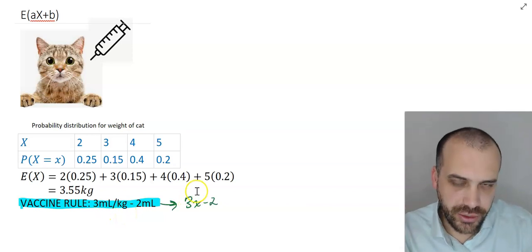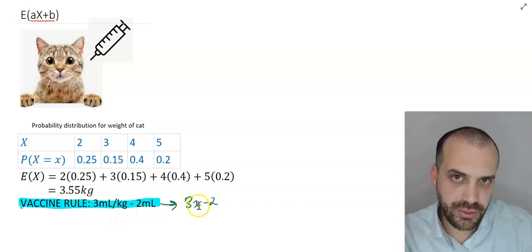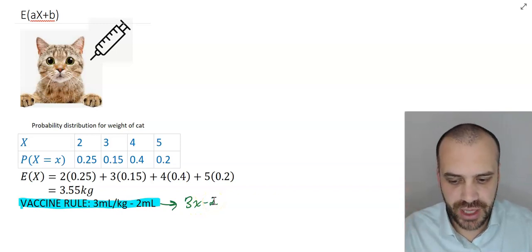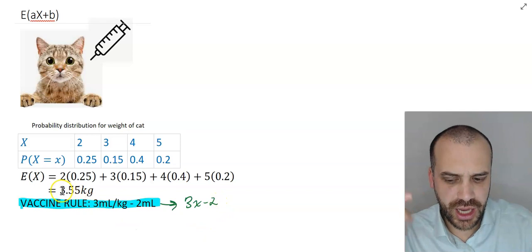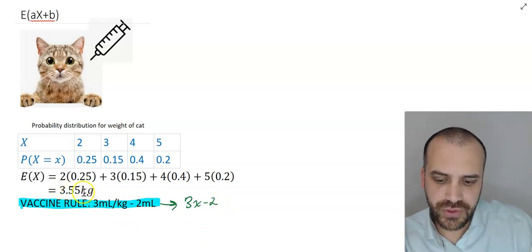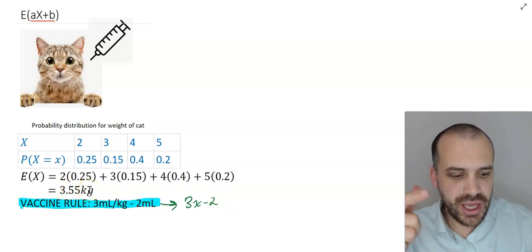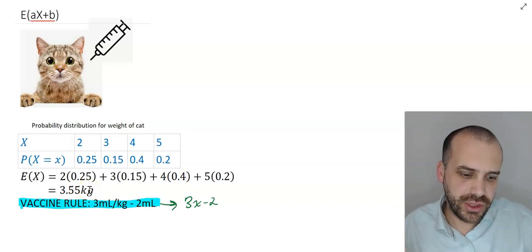If a cat weighed 10 kilograms, you'd give them 3 times 10, which is 30, minus 2, you'd give them 28 mils of vaccine. Now if the average cat weighs 3.55 kilograms, what's the average amount of vaccine you give out?